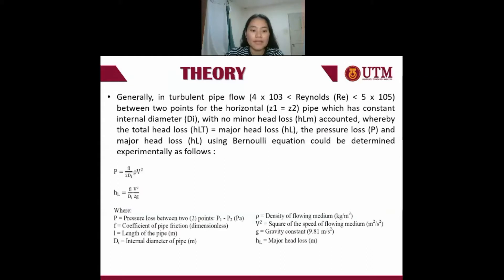For the major head loss, it is equal to the coefficient of friction multiplied by length, then multiplied by the square of the flow speed, divided by the internal diameter multiplied by 2 times the gravitational constant, giving the major head loss.